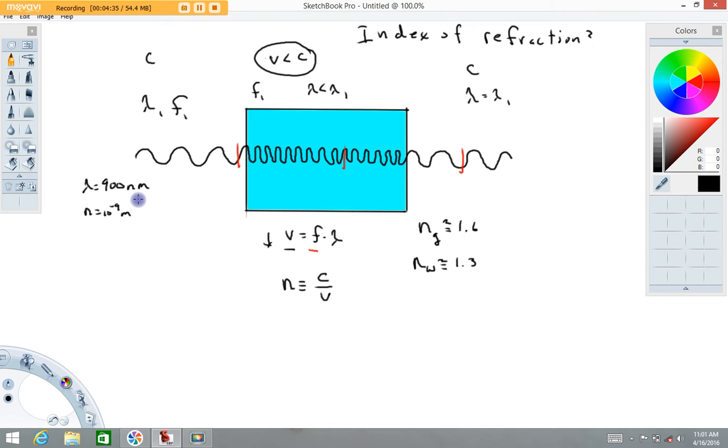So this incoming waveform has a wavelength of 900 nanometers. And what we're going to do is calculate its speed and its wavelength inside of this glass. So we'll start with the speed.